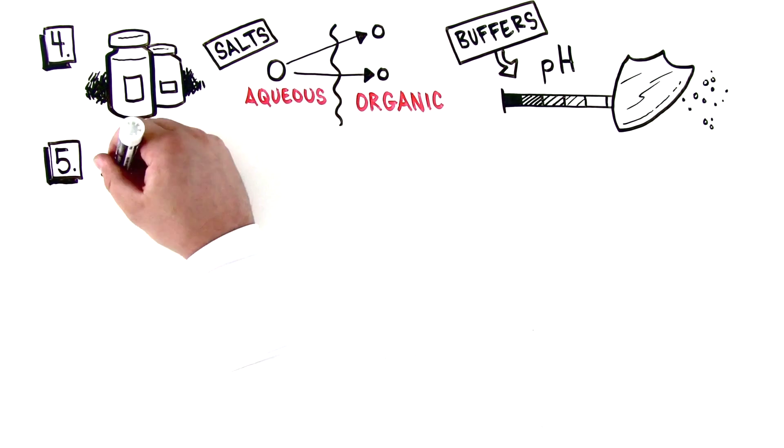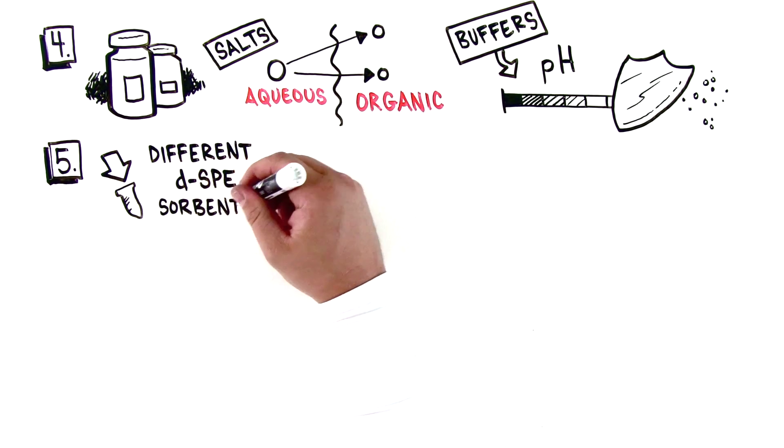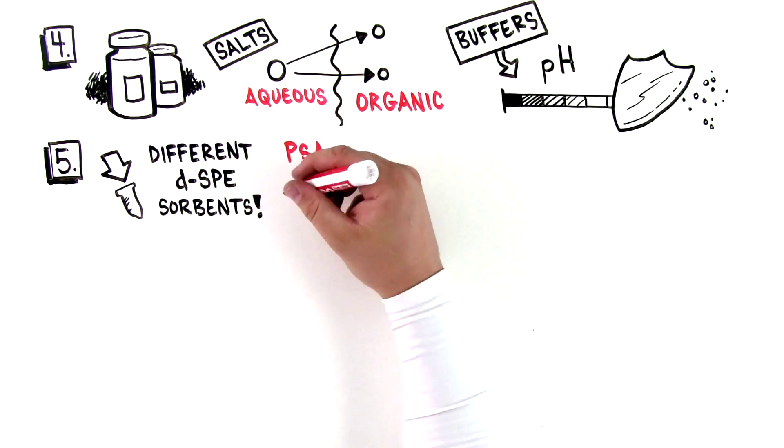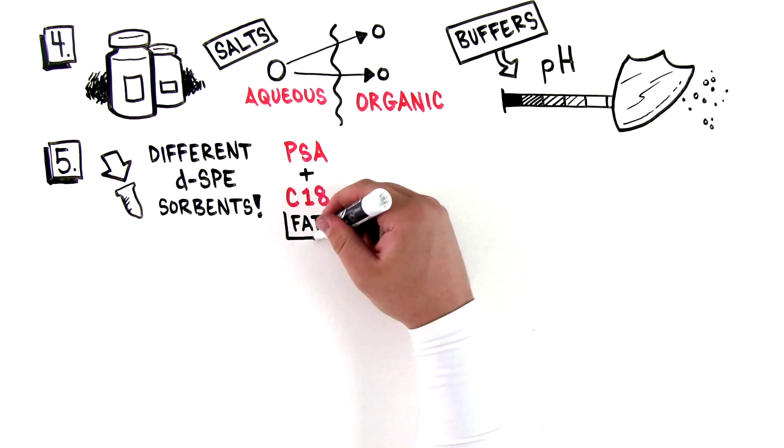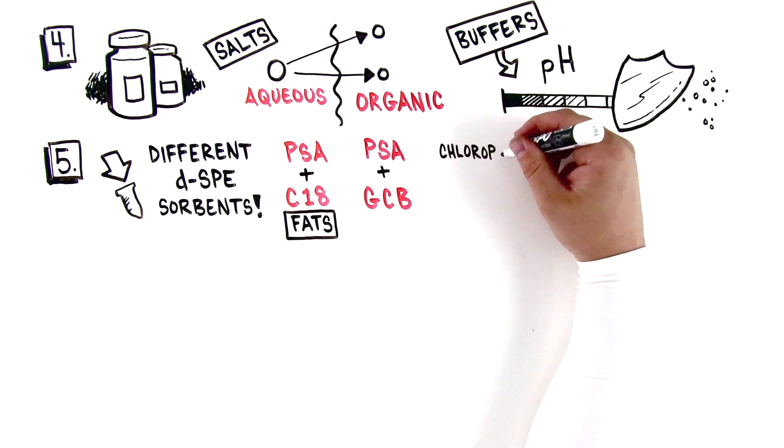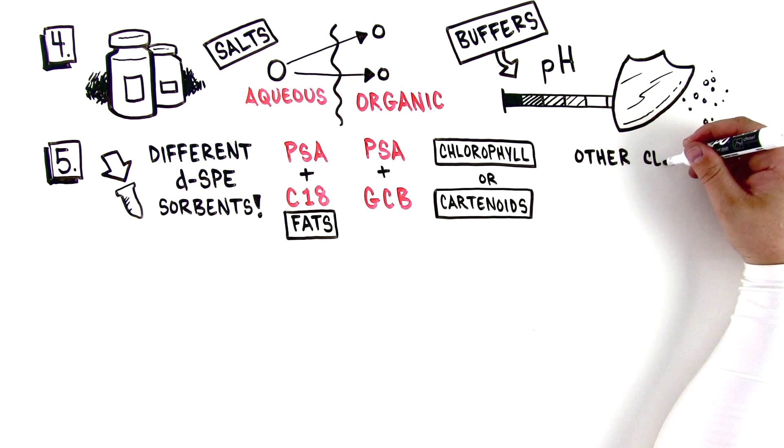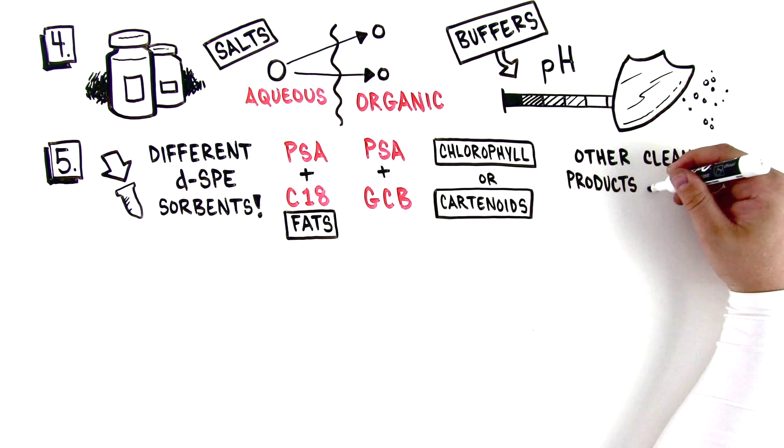Number five, different versions of QuEChERS use different dispersive SPE sorbents also. Typically, PSA is mixed with C18 for fatty samples, and PSA is mixed with graphitized carbon black, GCB, for foods with high levels of chlorophyll or carotenoids. Other combinations of cleanup products are available for a wide variety of applications.